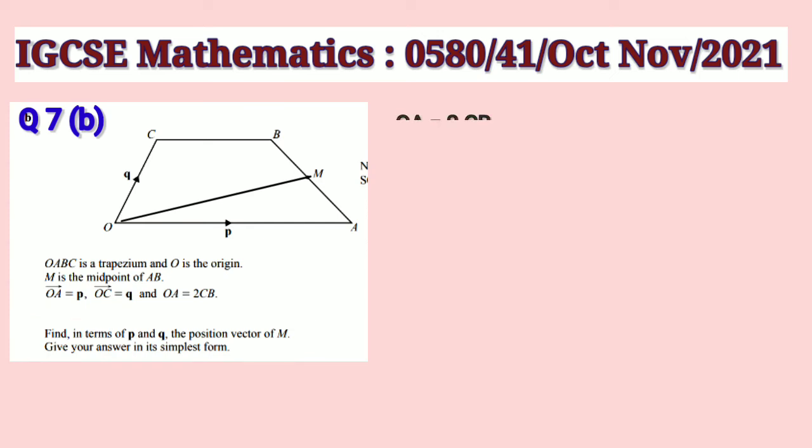We are given OA is equal to 2CB, therefore CB is equal to 1 by 2 OA or 1 by 2P. Let us find AC first.